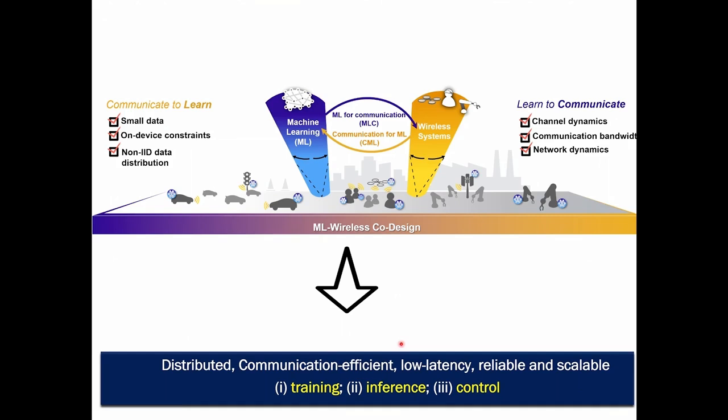This very interesting co-design between machine learning and communication gives rise to very fundamental problems in terms of how do you train a model in a distributed, communication efficient, fast and reliable manner. Now, given a pre-trained model, how do you do collaborative inference over wireless links? And also in terms of control, how would you learn a model for controlling, for example, your remote plant or object?